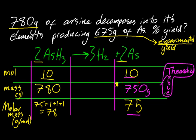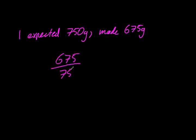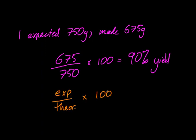So just remember, they both begin with T. So in my head, I'm thinking I expected 750 grams, but I made 675 grams. So that's a 90% yield. And if you want to do it memorizing the equation, there you go.